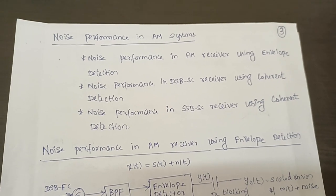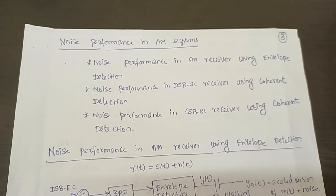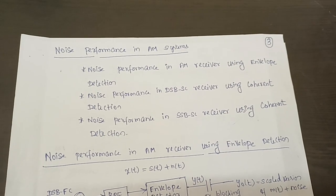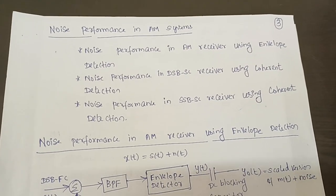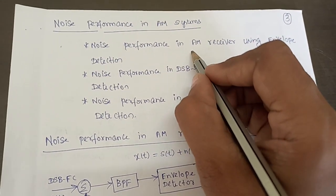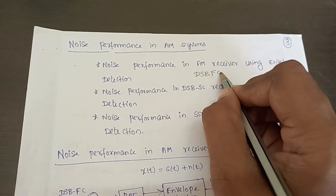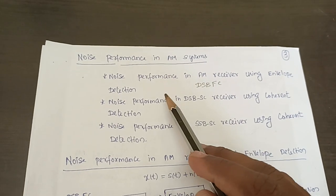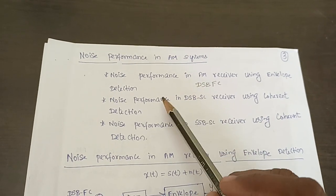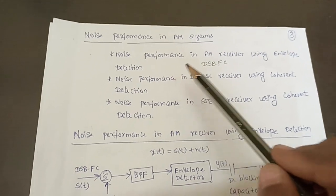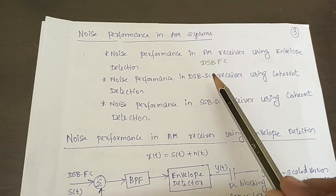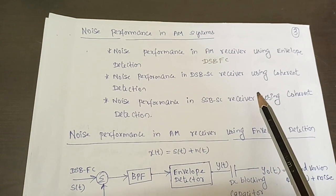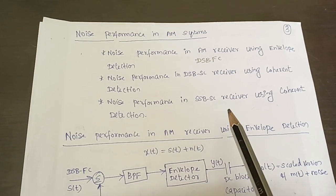Good day students. In this lecture, we are going to see the noise performance in AM systems. We know that AM can be classified into conventional AM, which we will be naming as DSBFC, then DSB double sideband suppressed carrier, and then SSBFC. While analyzing the noise performance in AM systems, we will study noise performance in AM receiver using envelope detector, that is DSBFC, then DSBFC using coherent detection, and noise performance of SSBFC receiver using coherent detection.